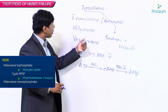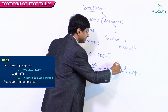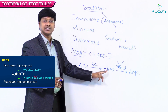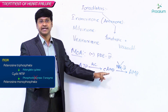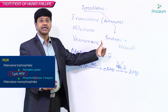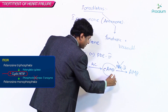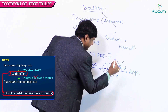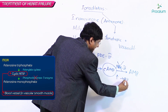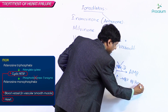These drugs inhibit phosphodiesterase-3. Once phosphodiesterase-3 is inhibited, the cyclic AMP level increases — both in the blood vessels and within the heart.